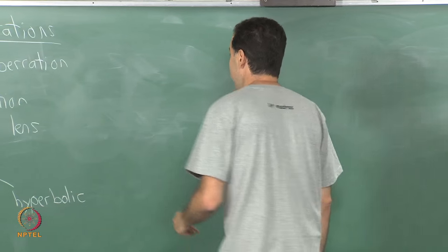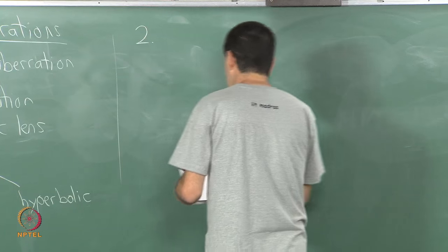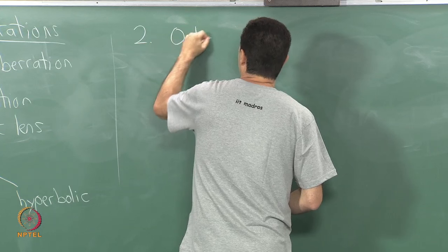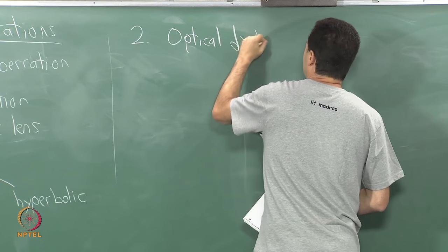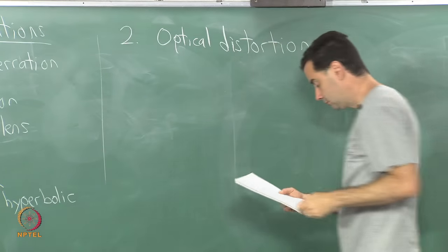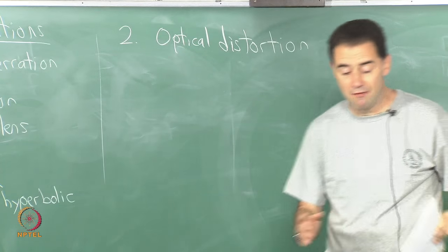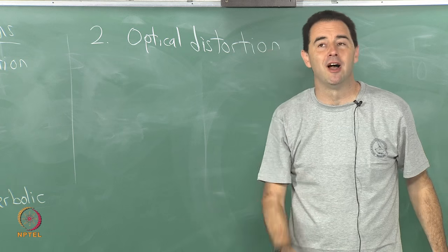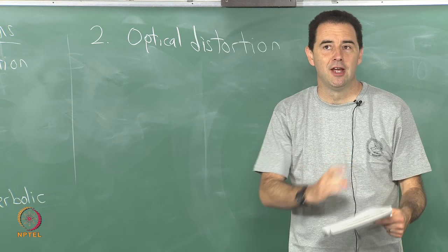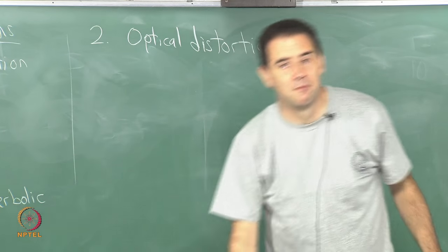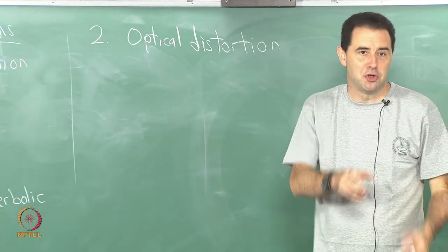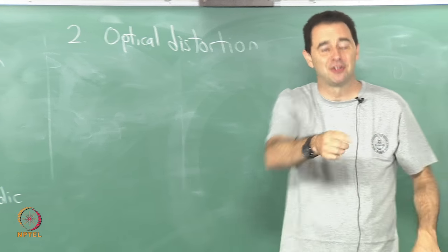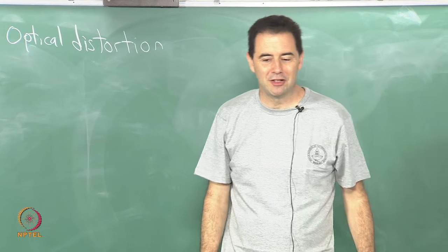The second aberration is optical distortion. When we have a high field of view, this can happen: if we put perfectly square grid lines in front of the lens — as you can demonstrate by taking the head mounted display from the lab, removing the lens cup, and placing it over some graph paper — the straight lines become curved. This kind of distortion is called pincushion distortion.